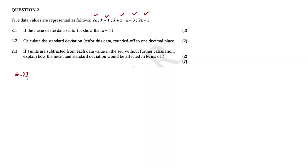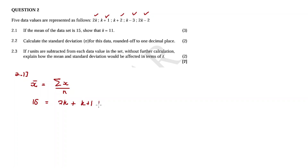For question 2.1, the way to answer this is: we must calculate the mean. x̄ equals the sum of the x values divided by the number of data sets. We have the mean equal to 15, so: 15 equals (2k + (k+1) + (k+2) + (k−3) + (2k−2)) all divided by 5.